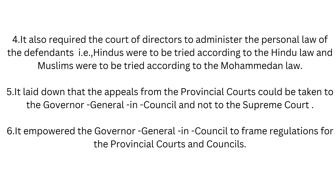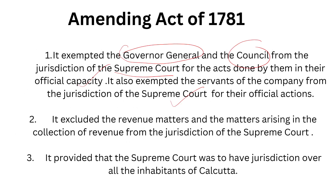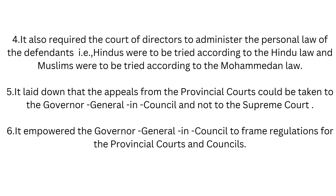Hindus were to be tried according to Hindu law and Muslims were to be tried according to Mohammedan law. So the inhabitants of Calcutta coming under the Supreme Court's jurisdiction would be dealt with according to their own personal laws for different cases. The next point: it laid down that appeals from the provincial courts could be taken to the Governor General and Council, and not to the Supreme Court. So in this arrangement, appeals went to the Governor General and Council rather than the Supreme Court.